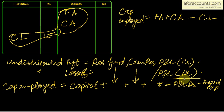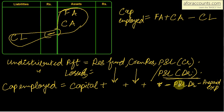Capital employed is equal to total operating assets minus outside liabilities at the revised value. Now let's find out what the methods are for valuation of goodwill — for super profit, there are three methods.